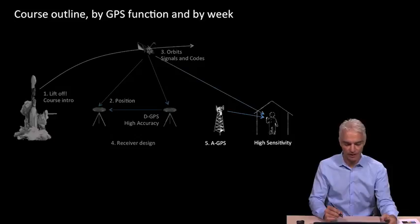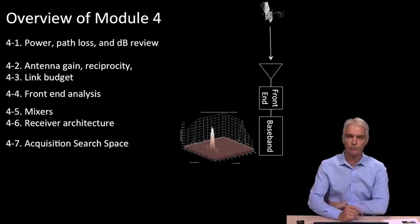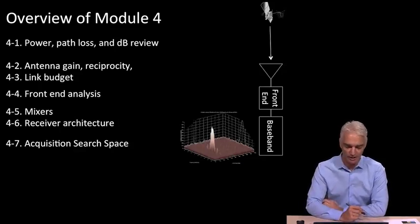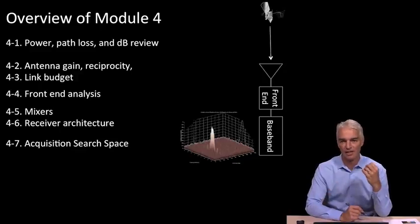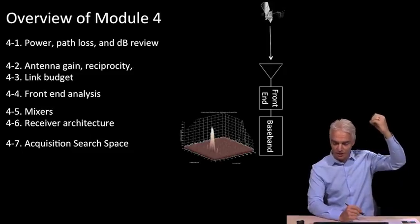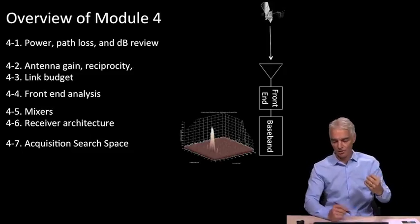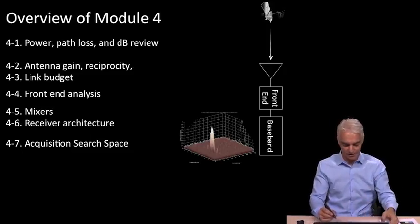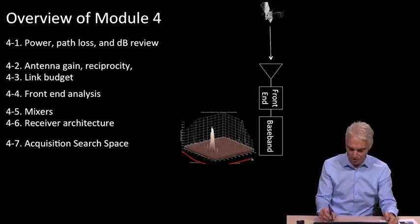So, to give you an outline of Module 5 that makes sense, I'm going to remind you of what the outline of Module 4 looked like, where we started with a signal from the satellite, remember the 27 watts, like a little light bulb in the sky, and we chased that signal through space, into the front end of the receiver, into the baseband, and that led us to this acquisition search space.